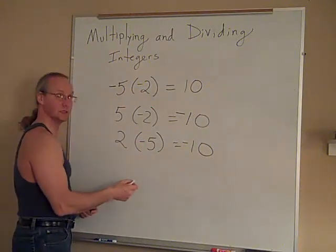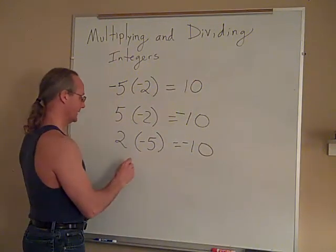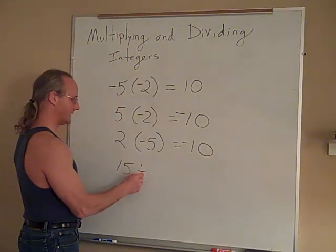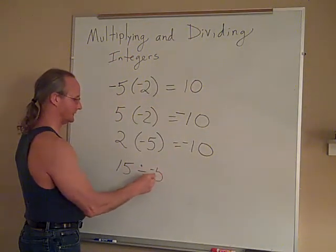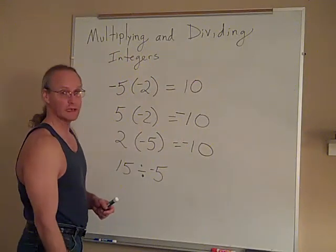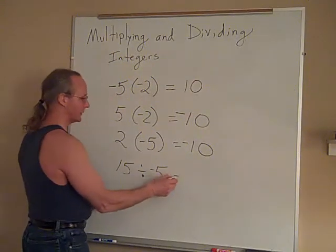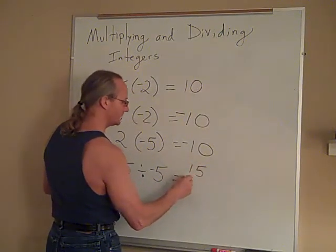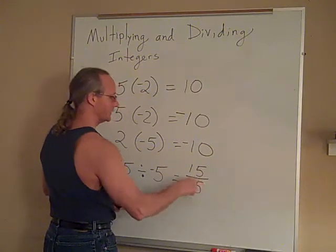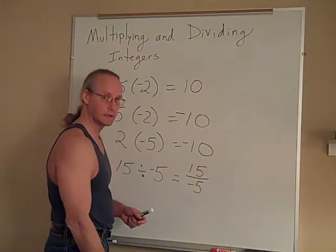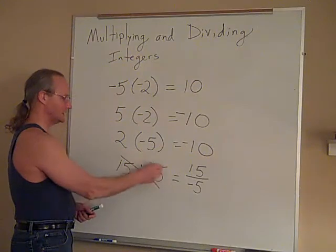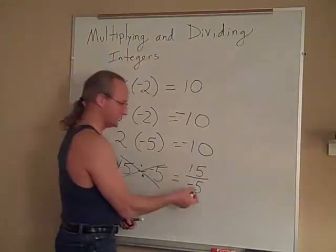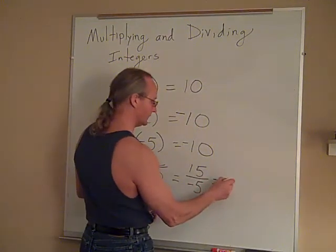The same is true for division. Division works exactly the same way. If I say 15 divided by 5, negative 5, the answer will be negative. Now, we don't want to write it this way. We want to write it as 15 divided by negative 5. We use this little division line in algebra rather than this one. Bad idea to use a division sign. I like this division sign better. 15 divided by negative 5 is negative 3.